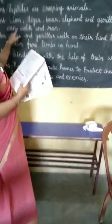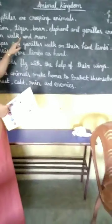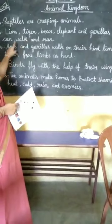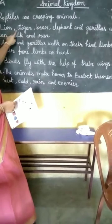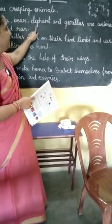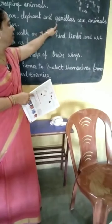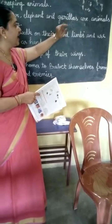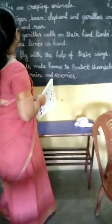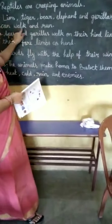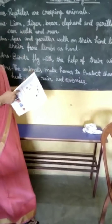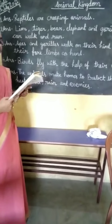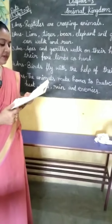Lion, tiger, bear, elephant, and gorillas are animals that can walk and run. Next question.